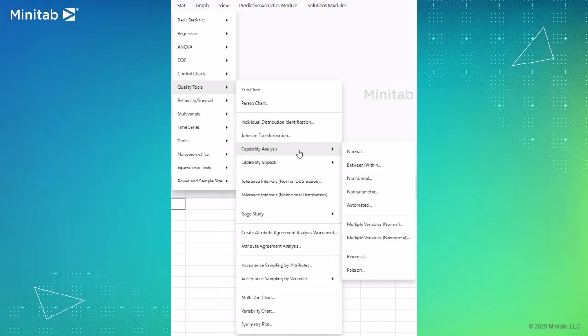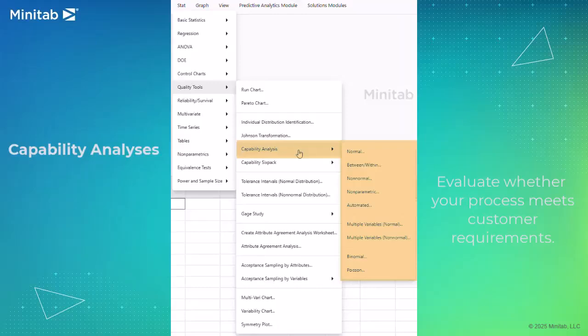Minitab Statistical Software offers a comprehensive selection of capability analyses to evaluate whether your process meets customer requirements. Analyses are available for either continuous data or attribute data as well as non-normal data.